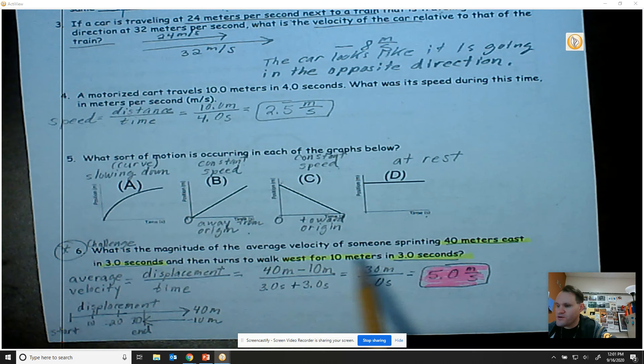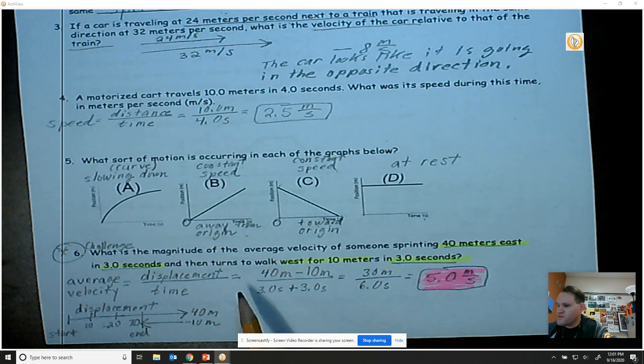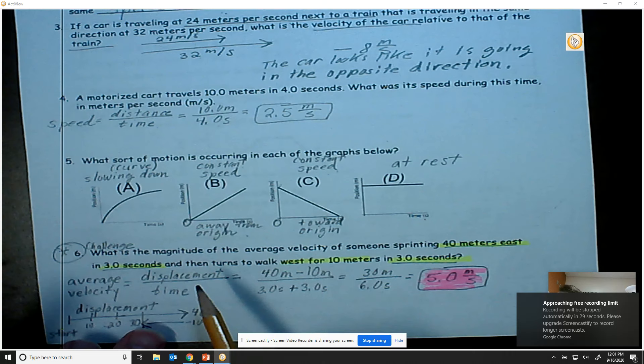So first of all, average velocity is the displacement divided by the time. Remember to find the displacement, the displacement is where an object starts to where it finishes. Notice it's 40 meters east and then it ends up going 10 meters west, so you take 40 meters minus 10 meters which is 30 meters overall positive.